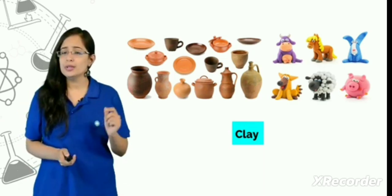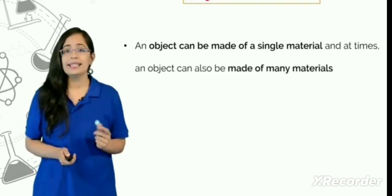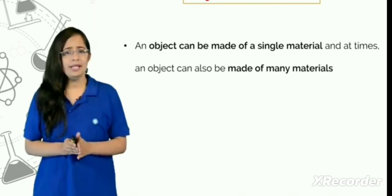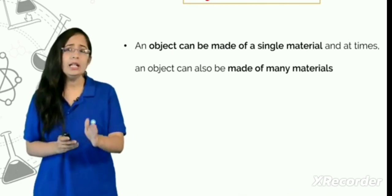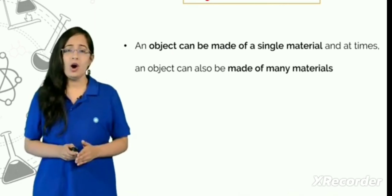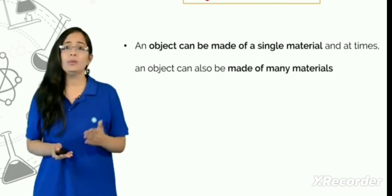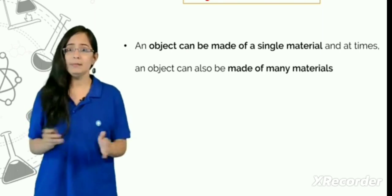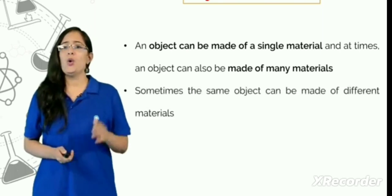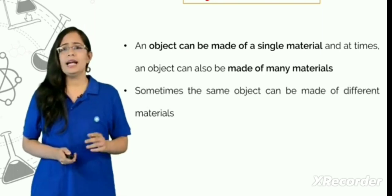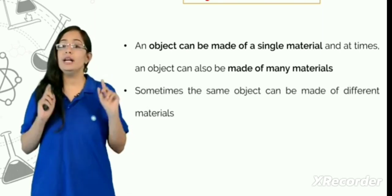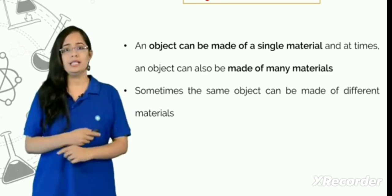Now, an important thing to note here is that an object can be made up of a single material, or an object can also be made up of many materials. Which means that the same object can be made up of different materials.